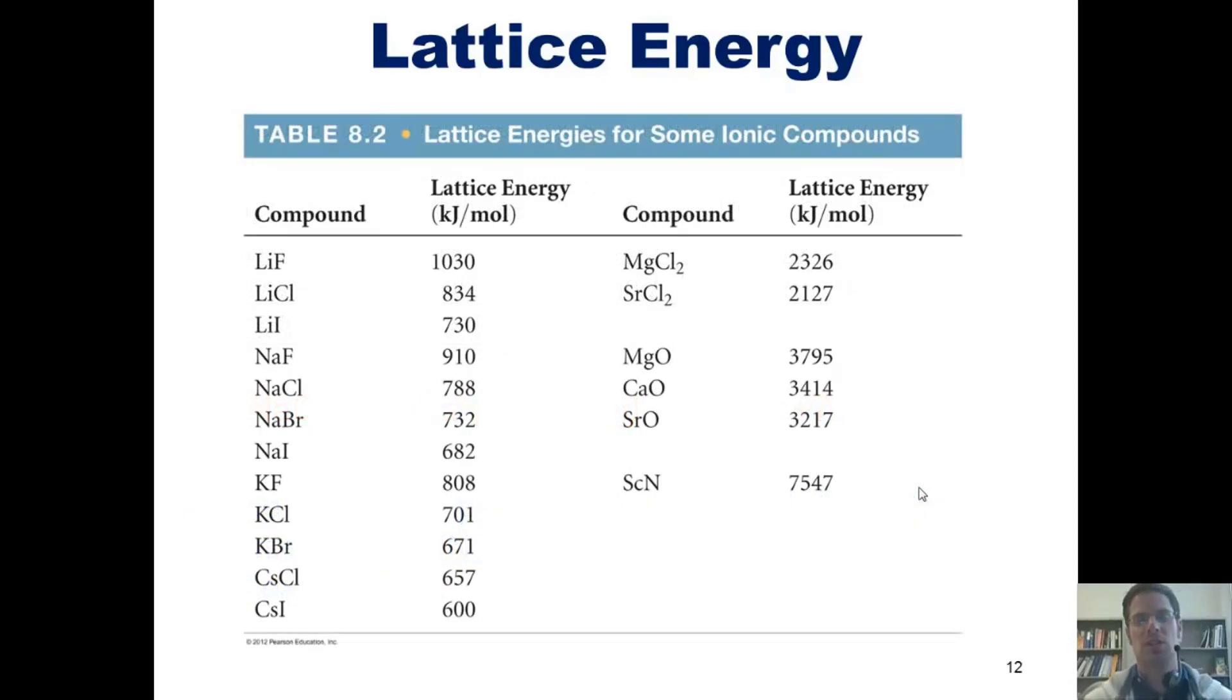This table shows us a number of lattice energies for various ionic compounds. As we analyze it, you'll notice, for example, that separating sodium and fluoride requires 910 kilojoules per mole. Separating magnesium and oxide requires 3795 kilojoules per mole. Separating cesium from iodide requires 600 kilojoules per mole, and so forth and so on.